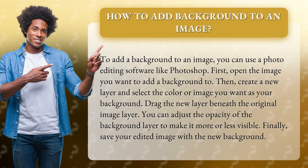First, open the image you want to add a background to. Then, create a new layer and select the color or image you want as your background. Drag the new layer beneath the original image layer. You can adjust the opacity of the background layer to make it more or less visible.